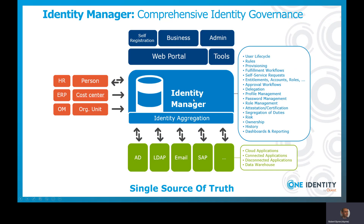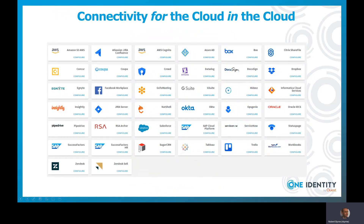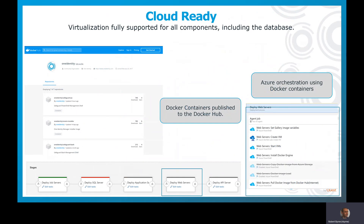Our identity governance platform is a traditional, centralized identity governance platform — very comprehensive and complete. In the context of the cloud, whether it's the authoritative system running in the cloud, the target system in the cloud, or the governance platform itself in a cloud-based form factor, all of these can be consumed in a cloud way and are cloud-ready. We have over 40 connectors focused on cloud systems, and we add to that all the time. The form factor includes cloud-ready containerized components that can be integrated with your favorite orchestration engine — Azure Pipelines, Amazon technologies, Octopus, or Kubernetes — for rapid deployment.